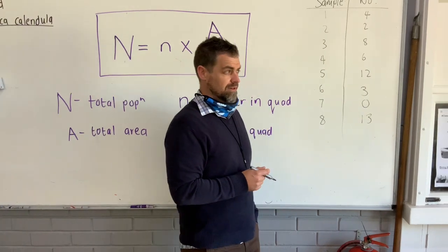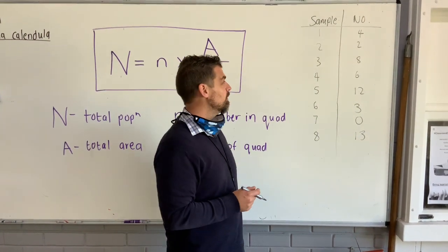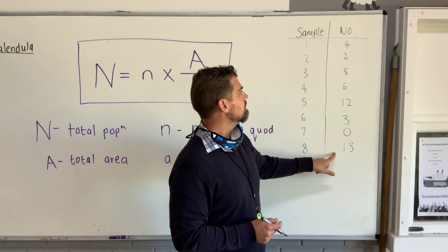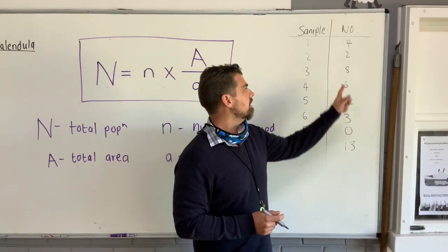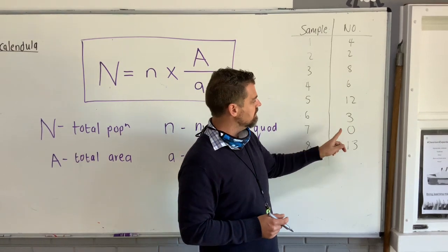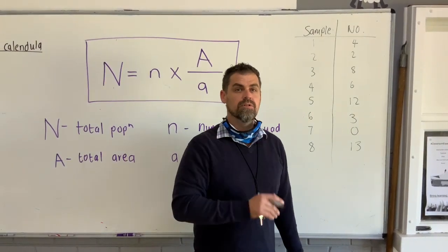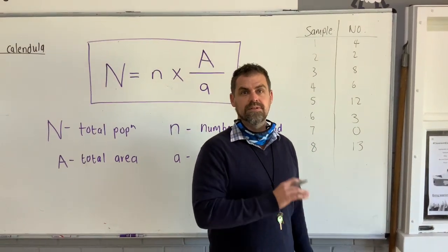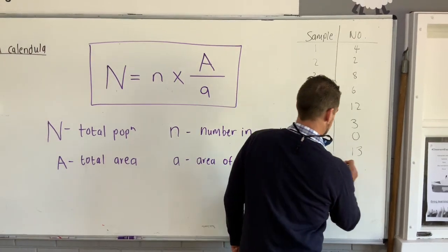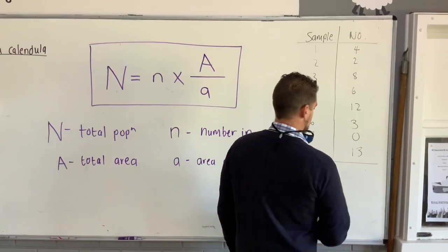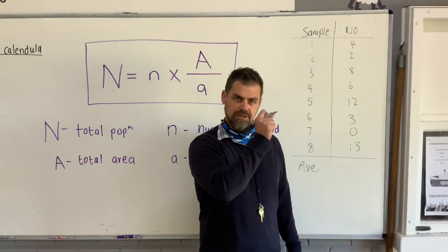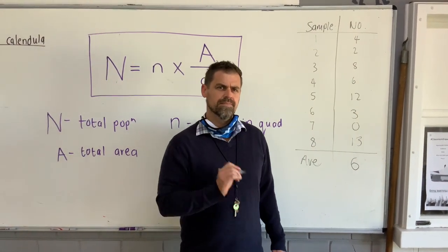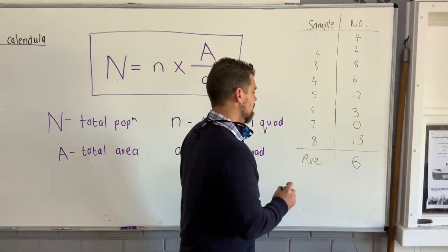So, after a very exciting data collection, we collected eight samples, eight different samples, using our quad, and we had a number of different counts in each of those quads. We had 4, 2, 8, 6, 12, 3, 0, and 13 each time that we repeated that randomly. Now, what we're going to do with this is we're going to calculate the average number of plants that we counted per quad. And my maths is excellent. I know offhand, just by looking at those numbers, that the average is 6 per quad. Quick maths.